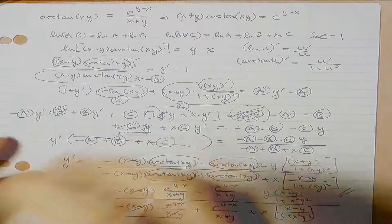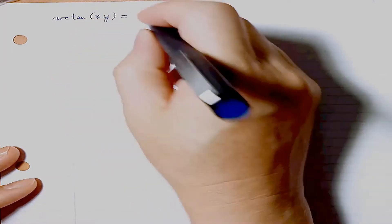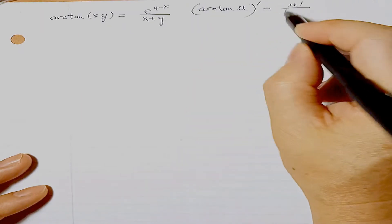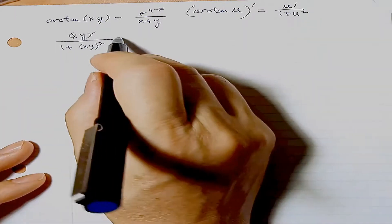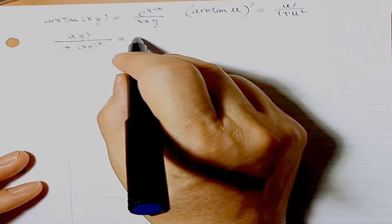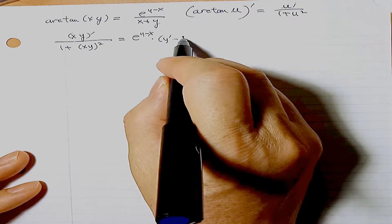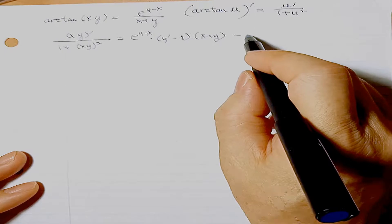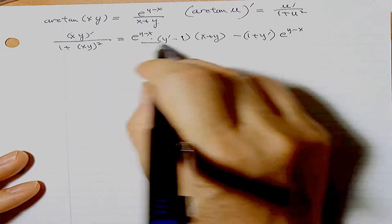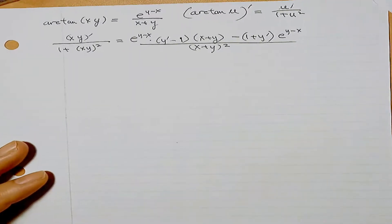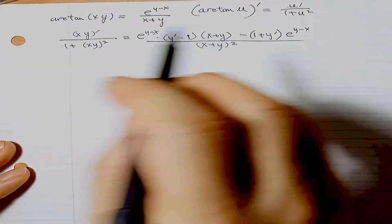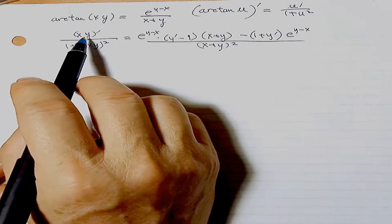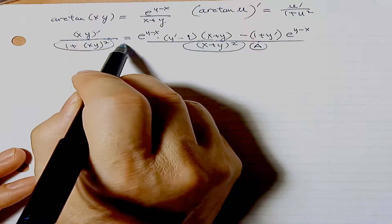Now I'll redo this — arctan(xy) = e^(y-x)/(x+y) — without using logs on both sides, to verify we get the same answer. Recall: derivative of arctan(u) = u'/(1+u²). So the left-hand side derivative is (xy)'/(1+(xy)²). The right-hand side requires the quotient rule: [e^(y-x)·(y'-1)·(x+y) - (1+y')·e^(y-x)] / (x+y)². At this point you have a decision: expand everything and factor out y', which is tedious, or assign variable names to parts.